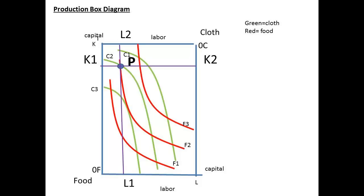Any point inside the box is a possible production unit. We have shown a point P here. At this point, OFK1 units of capital are used for food, and OCK2 units of capital are used for cloth. Also, OFL1 units of labour are used for food, and OCL2 units of labour are used for cloth.